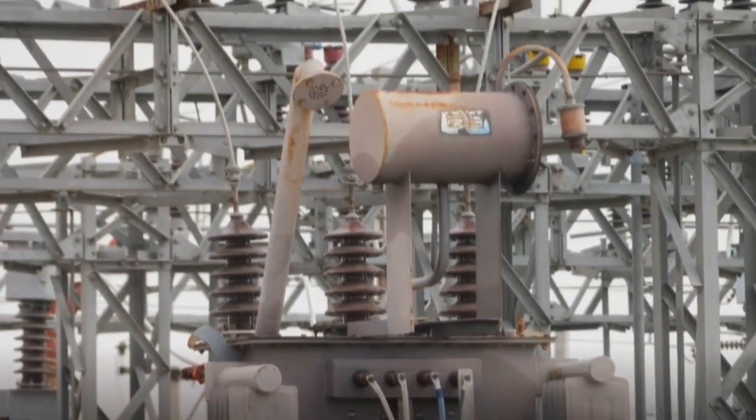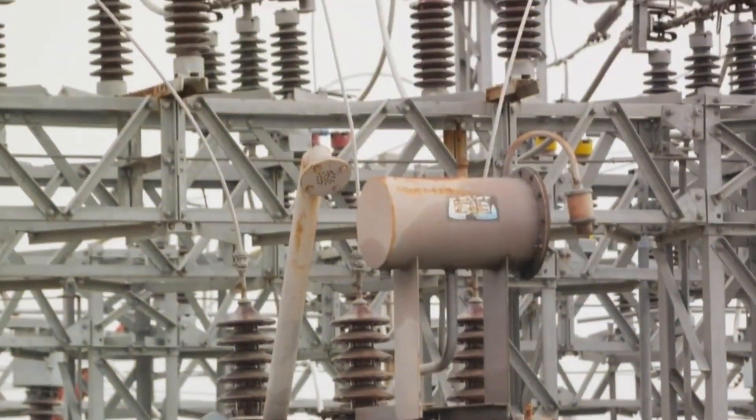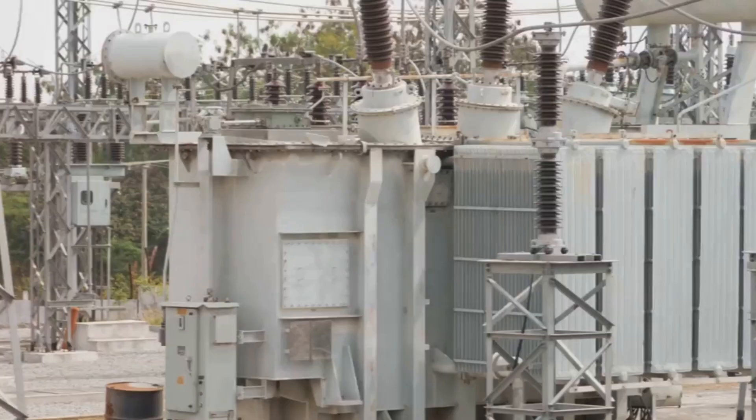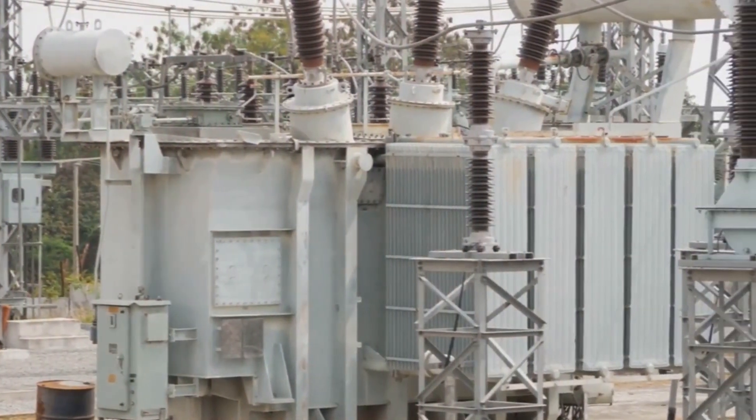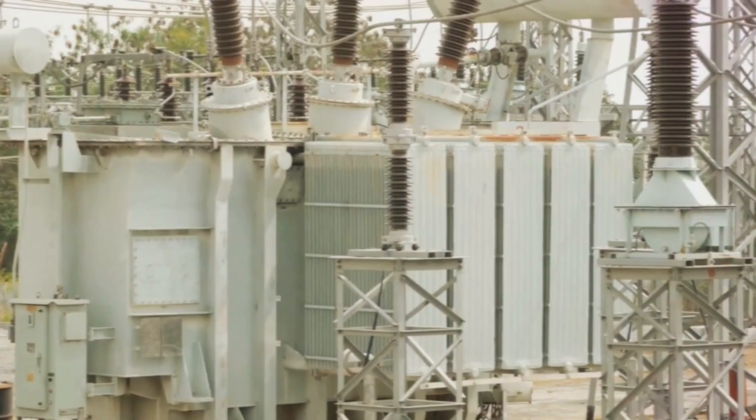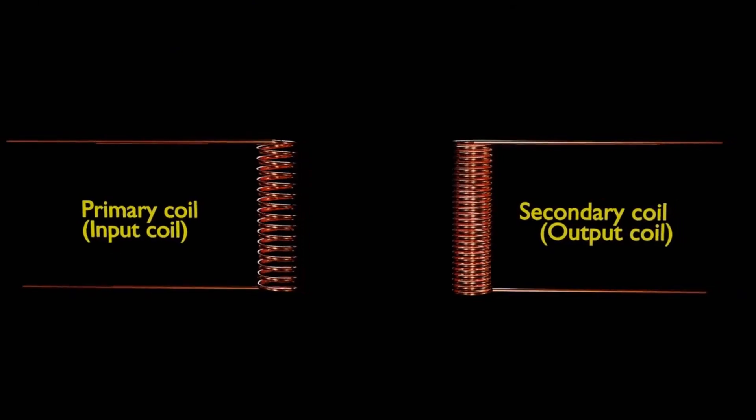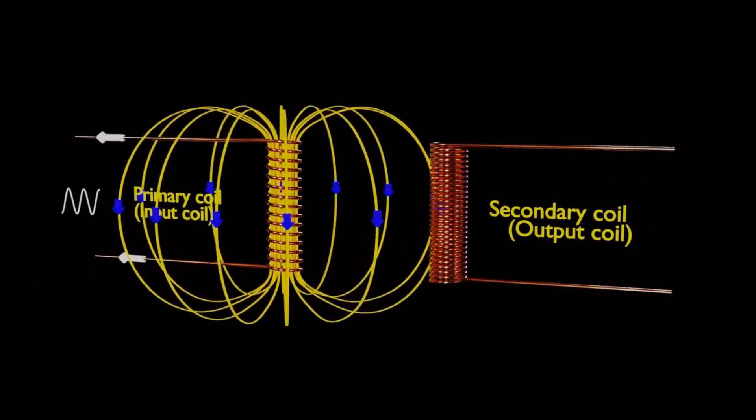Have you ever wondered why the transformer core is laminated? Before we get to that, let's understand what a transformer is. A transformer, in the simplest of terms, is an electrical device that's designed to transform electrical energy. It does this magic through a process called electromagnetic induction.